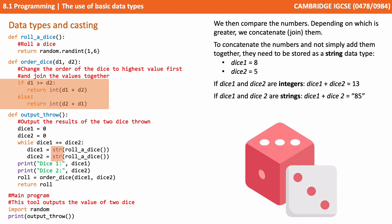The program then compares the numbers. Depending on which is greater, we concatenate or join them together. To concatenate the numbers and not simply add them together, we need to store them as the string data type. Let's pretend the dice1 variable holds 8 and the dice2 variable holds 5. If dice1 and dice2 are integers, then dice1 plus dice2 is 13. But if dice1 and dice2 are strings, then dice1 plus dice2 is 85 because we've joined two strings together, not added two numbers together.